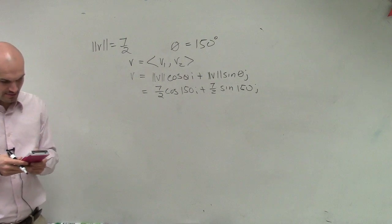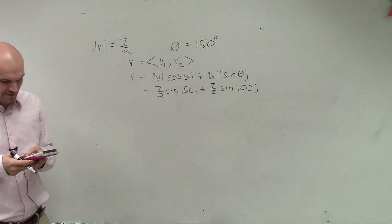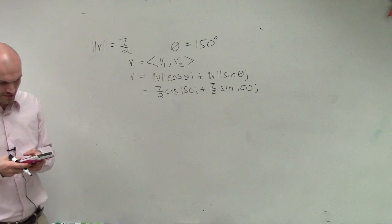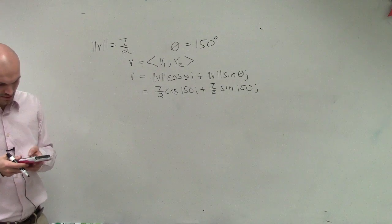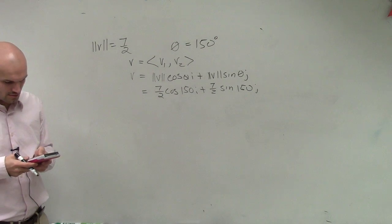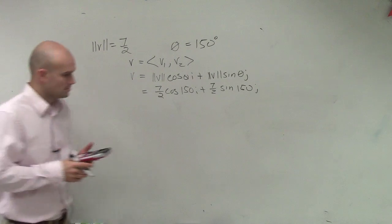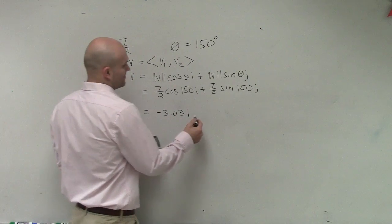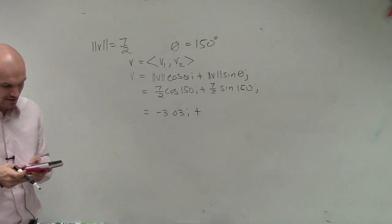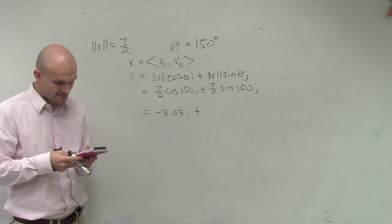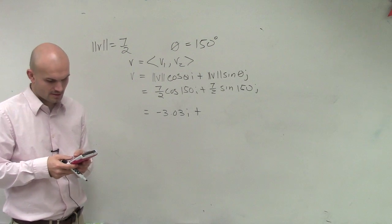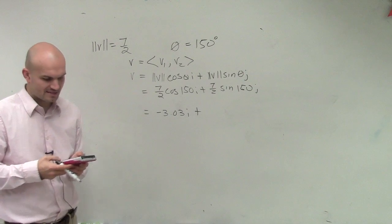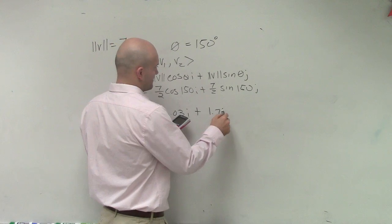So what I do is cosine of 150 times 7 divided by 2, so I get negative 3.03 i plus the sine of 150 times 7 divided by 2, which equals 1.75 j.